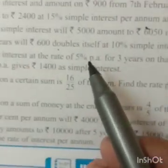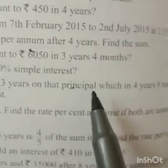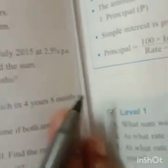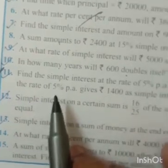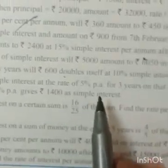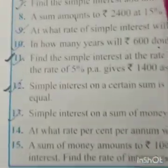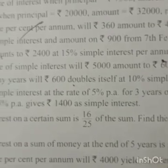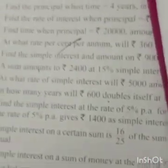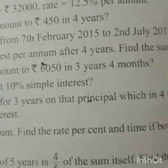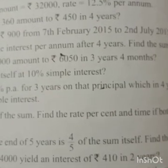Question number 11: find the simple interest at 5% per annum for 3 years on a principal which, in 4 years 8 months at 5% per annum, gives rupees 1400 as simple interest. You have to find SI where rate = 5%, time = 3 years; the same principal P is unknown.